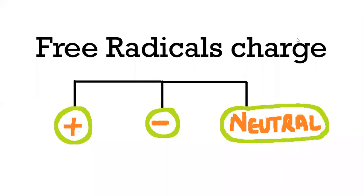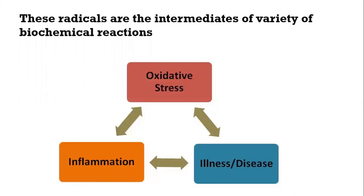Free radicals can have positive, negative, or neutral charge depending upon their configuration and valency. These radicals are basically the intermediates of biochemical reactions. For example, in the case of inflammation, disease, or oxidative stress, certain steps in these processes generate free radicals which are released into the living system, creating a chain that causes damage to the living body.